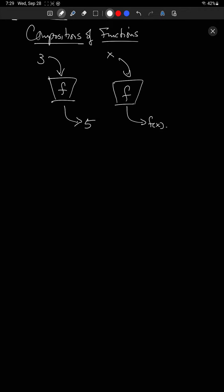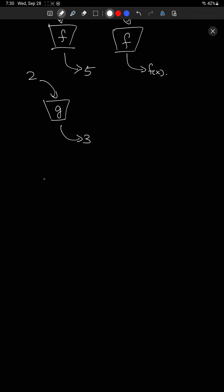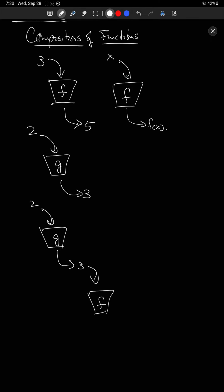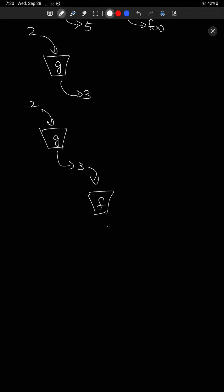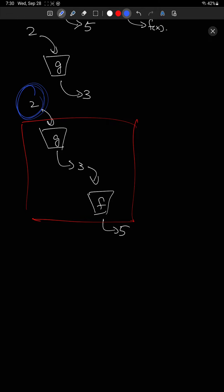What we're going to be doing in this section is we're going to be chaining these functions. So maybe I have another function called g. Let's say I put two into g and I get three out of g. Then what happens if I chain g and f? I put two into g, I get three out, and then I put that three into f. When I put three into f, I get five out. So this new machine — you put in two and you get out five.